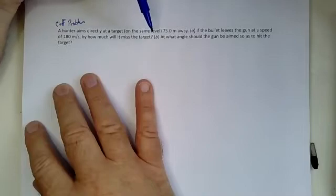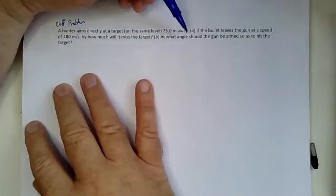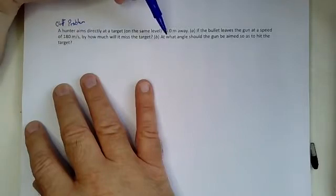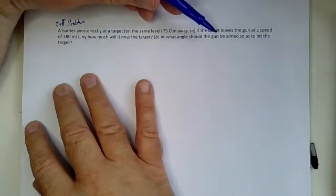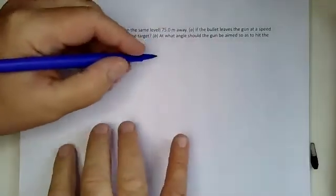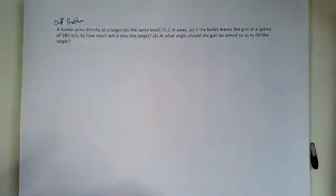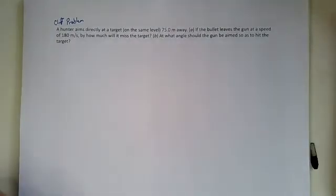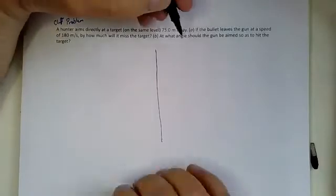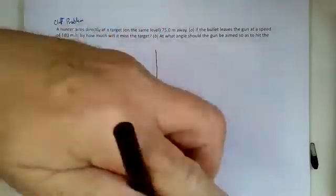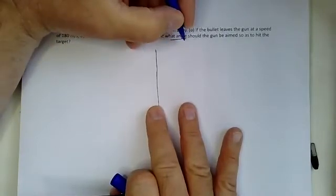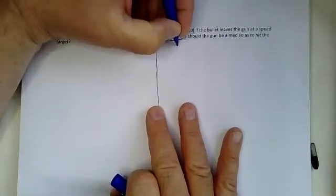I'm going to call this a cliff problem. A hunter aims directly at her target on the same level, 75 meters away. The bullet leaves the gun at a speed of 180. By how much will it miss the target and what angle should the gun be aimed so as to hit the target? This is a two for one. So let's take our workspace and we'll divide it into two parts. And this, at what angle, is a range problem.